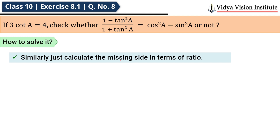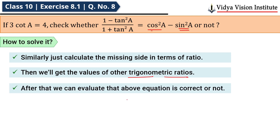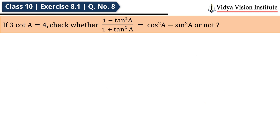Similarly, we will calculate the missing side in terms of ratio, and after that we'll get the values of other trigonometric ratios like cos A and sin A. Then we'll substitute those values into this equation and check whether the equation is correct or not.